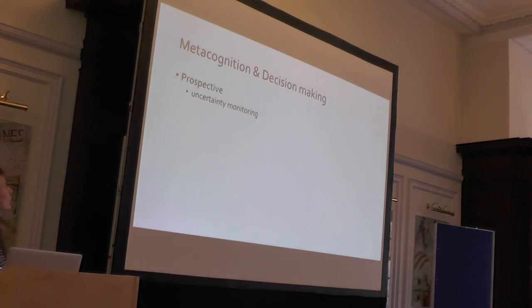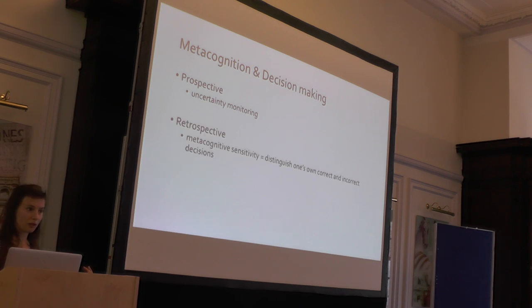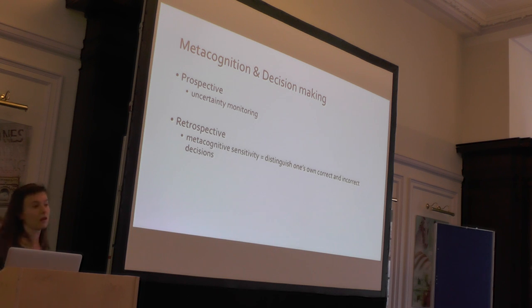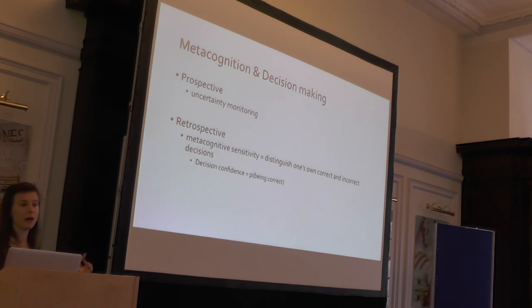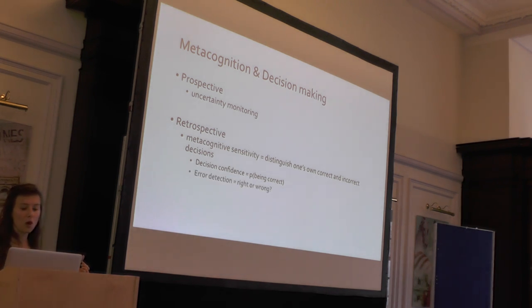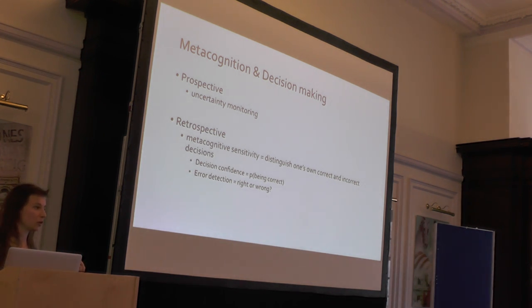That example illustrates prospective metacognition - reflecting upon your knowledge before you take a decision. But you can also do this after you've taken your decision: retrospectively monitoring whether your decision was correct or not. This is referred to in the literature as metacognitive sensitivity - the ability to evaluate your own decision, either by computing a probability that your decision was correct (called decision confidence) or deciding dichotomously whether your decision was correct or not.